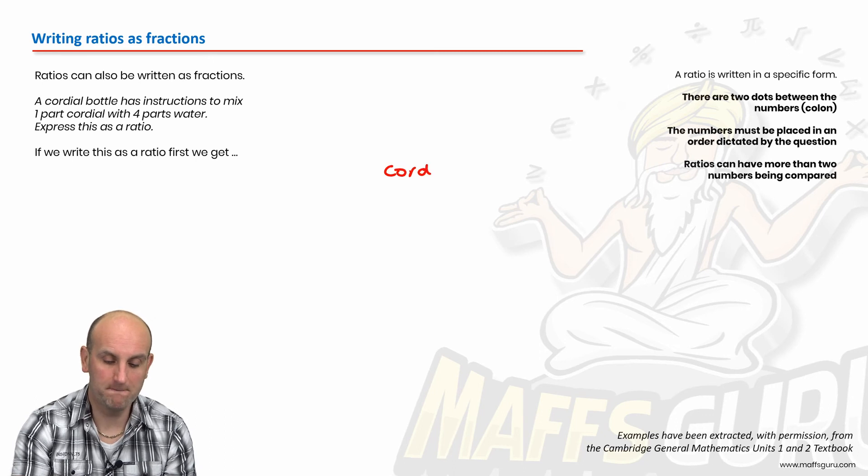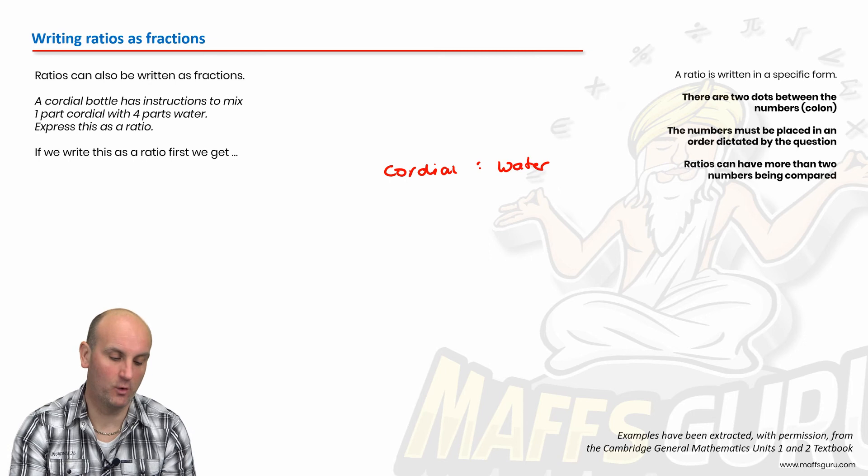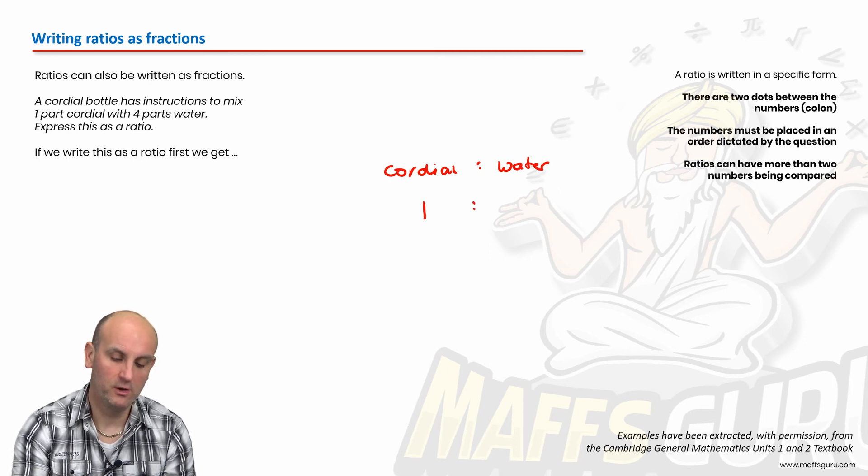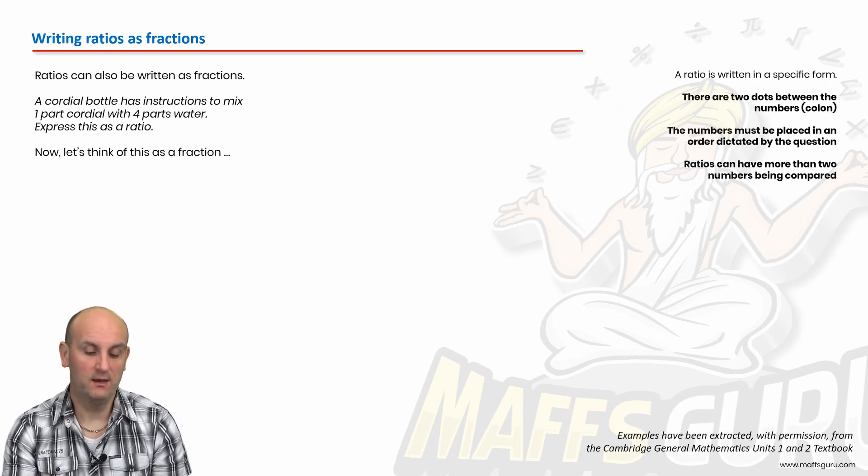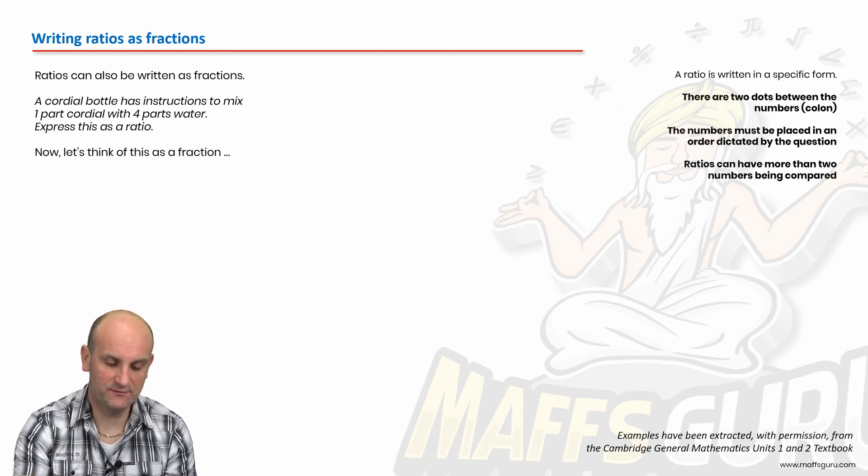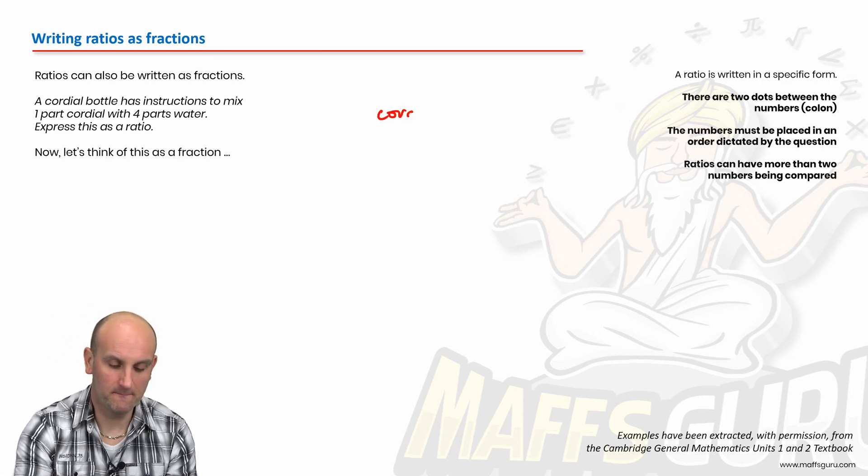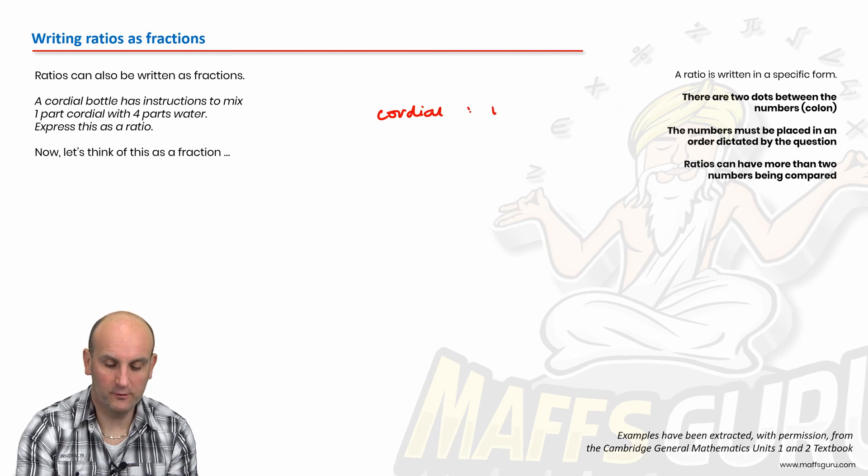If you've ever mixed paint and you want to try and sort of get various colour, you go into Bunnings, what do you notice? You put a pot of paint under there and they squirt various colours in, in different ratios. And that's what actually creates a different colour. So one part cordial to four parts water, express this as a ratio. I've got cordial dot dot water. That's my ratio. So I've got one part cordial to four parts water. There we go. So that's as a ratio.